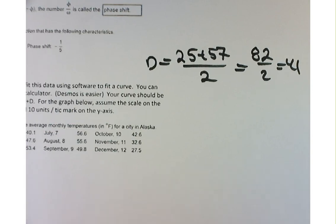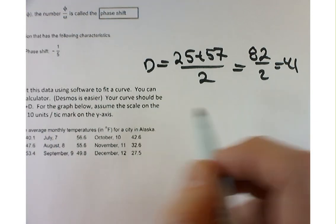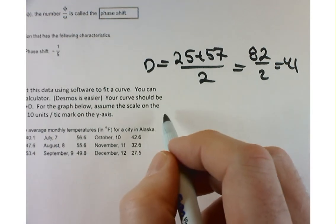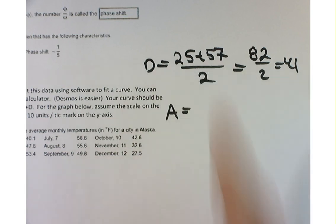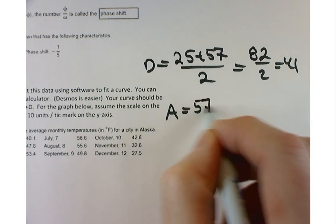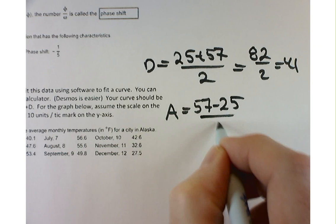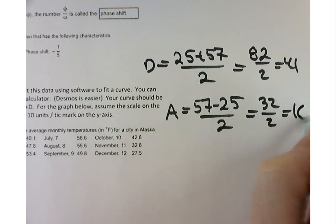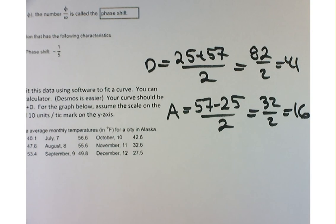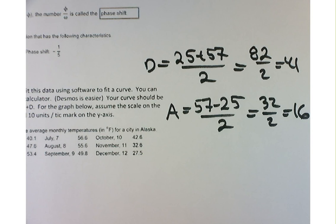Now the next easy part is figuring out what A is. A is going to be the amplitude. A is going to be half of the distance between the top and the bottom. So in our case, it's going to be 57 minus 25 divided by 2. So 32 over 2 equals 16. The first two are the easiest two. The next two get progressively harder.